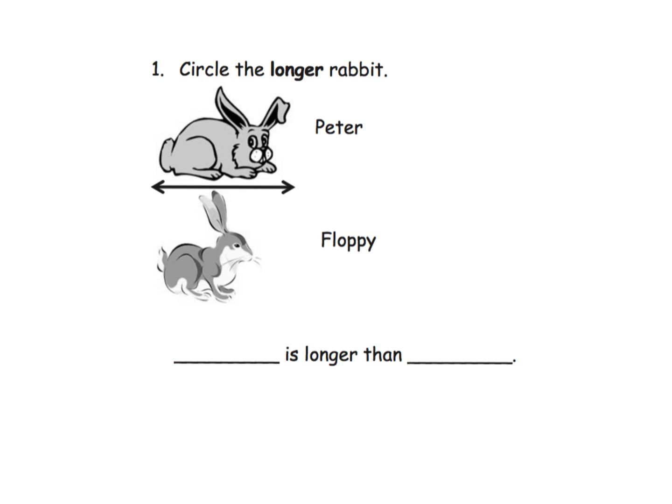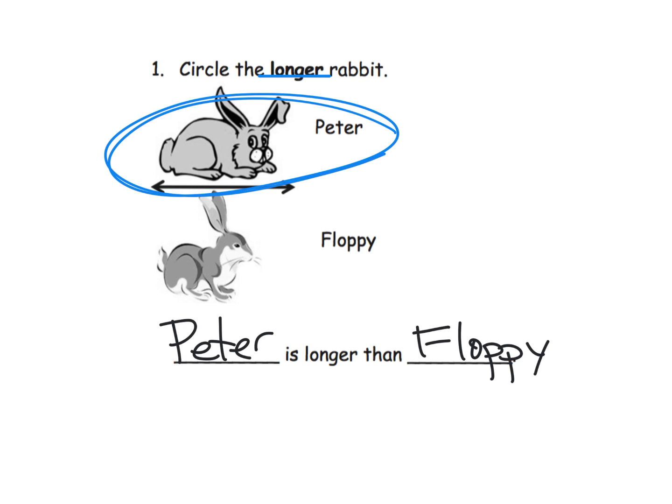So we're going to put this into practice here and it says circle the longer rabbit. And so as we're looking we can see, oh it looks like Peter is longer than Floppy. So down here we're going to put Peter is longer than Floppy. And these are the kinds of sentence frames that we're going to want to use during this module.